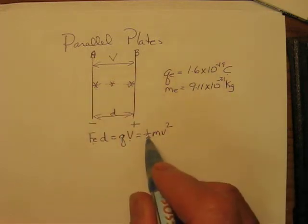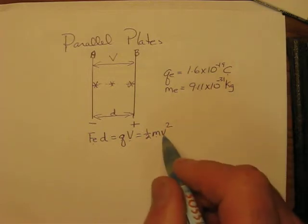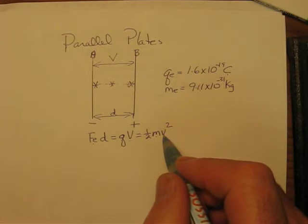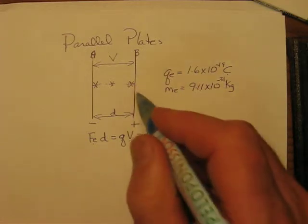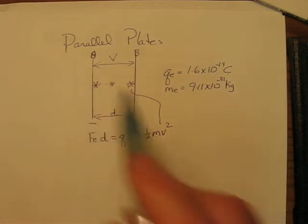So that would equal one-half times the mass. If it was an electron, it would be this times the velocity. This velocity is the velocity that it would have in this location here if it had started here, the final velocity.